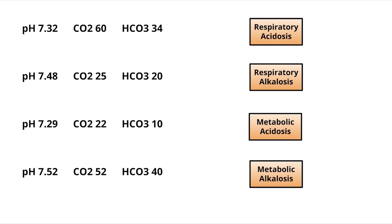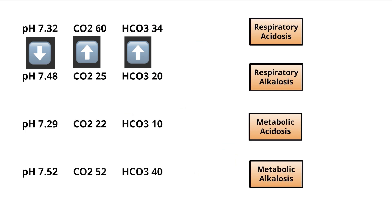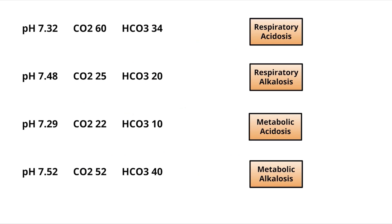Example one: pH is 7.32, which is less than 7.35 — so it is acidosis. CO2 is increased above the normal of 35–40, and bicarbonate is also increased above the normal of 22–26. Both CO2 and bicarbonate are going hand in hand, and their direction is opposite to that of pH going down. Since the direction is opposite to pH, by ROME it is a respiratory disorder — hence respiratory acidosis.